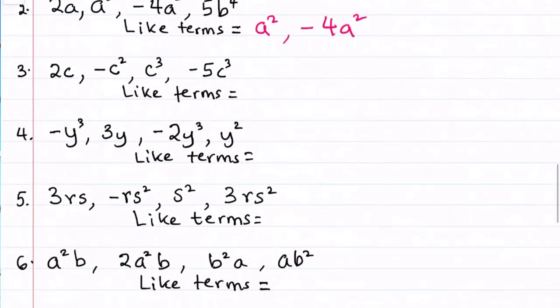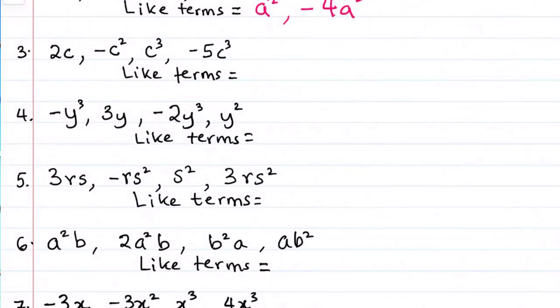Then we'll go to the third example. 2c, minus c squared, c cubed, minus 5c cubed. If you look at 2c, we don't have any other c in the list.